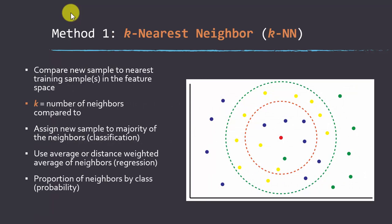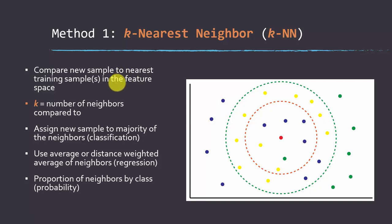We're going to start off with arguably the simplest machine learning algorithm: K nearest neighbor, where K basically just stands for a number — like three, four, or five nearest neighbors. The idea of K nearest neighbor is to compare a new sample to the nearest training samples in the feature space, meaning within the variable space defined by the predictor variables.